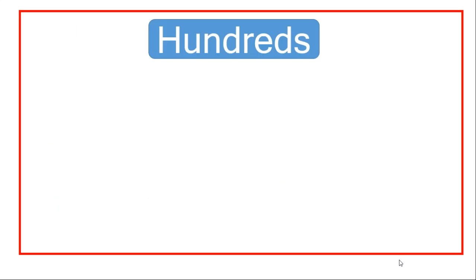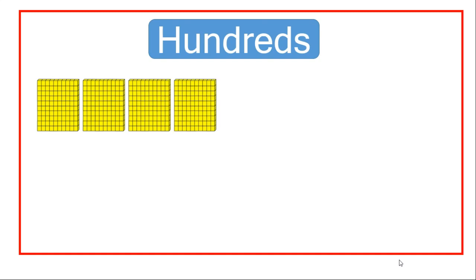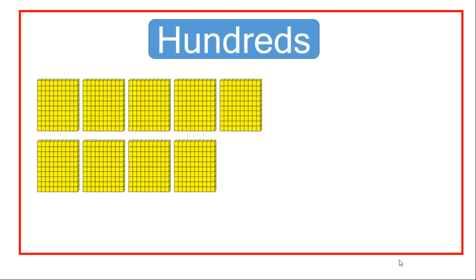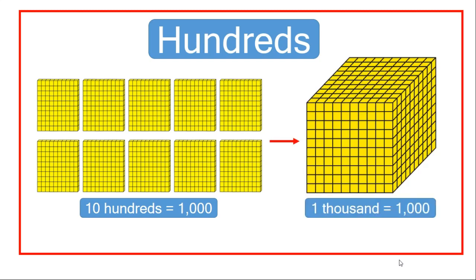Let's look at hundreds. If I have one block of one hundred, two blocks of one hundred, three blocks, four blocks, five blocks, six blocks, seven blocks, eight blocks, nine blocks, and ten blocks — this means that I have ten blocks of hundreds. So I have ten hundreds, and ten hundreds gives me one thousand. I'll get one block of one thousand.